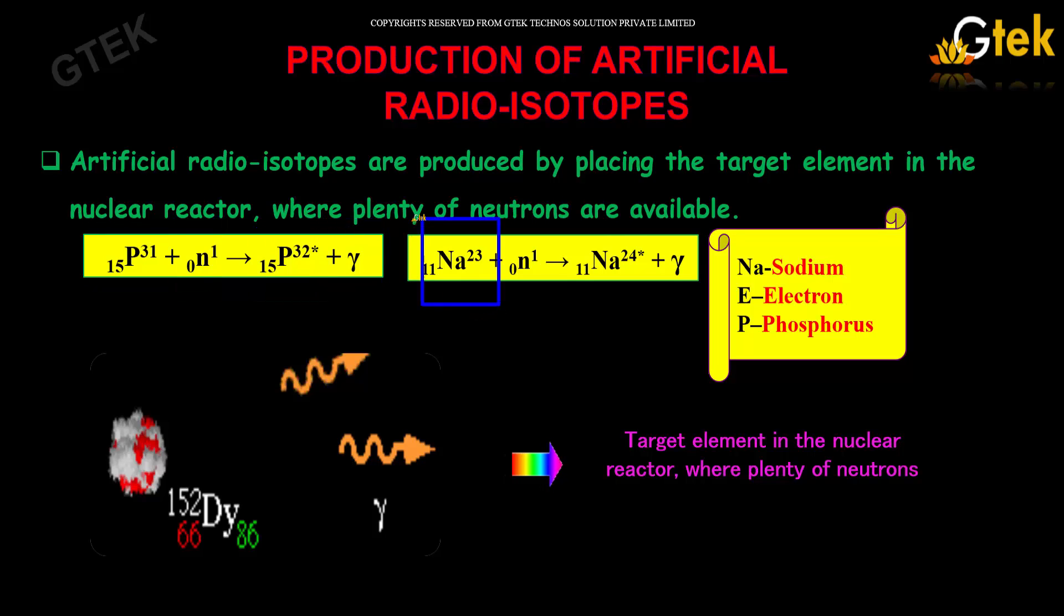And sodium-23 with a neutron will become an unstable sodium-24 with the emission of gamma rays.